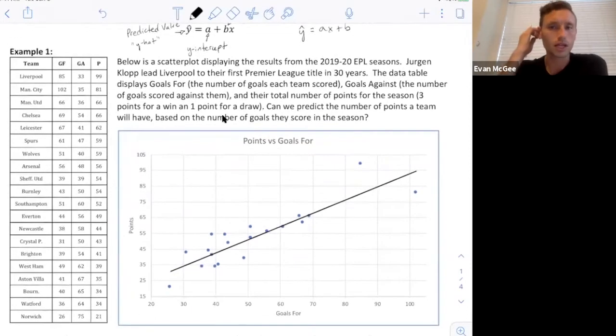I'm going to show you how to calculate the line of regression. I have the Premier League standings from the 2019-2020 season, where we have each team listed in order of how they finished, the number of goals they scored or goals for, the number of goals that they gave up, and the total number of points that they ended the season with. They get three points for winning a game, they get one point for a draw, and they get zero points for losing a game.